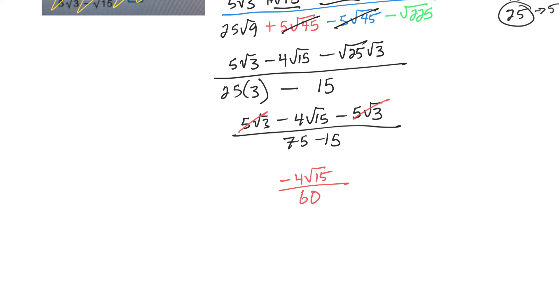Feeling pretty good here. Now 60, I can simplify that too. Minus 4 root 15. 60 is the same thing as 4 times 15. So the 4s cancel. And I'm left with, in the end, a negative root 15 over positive 15.